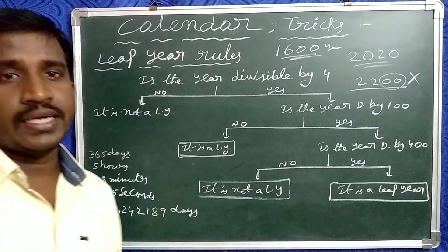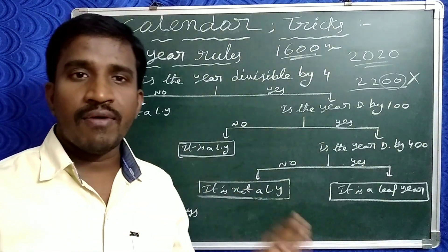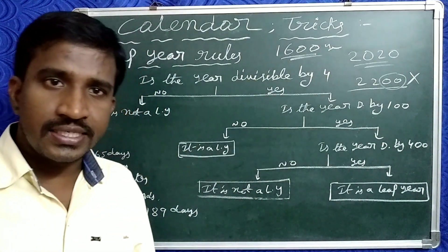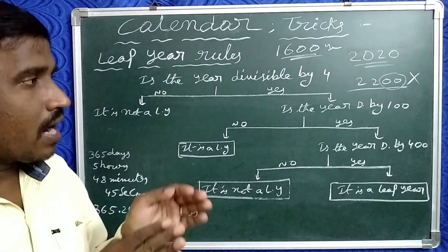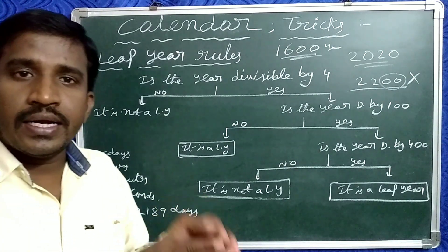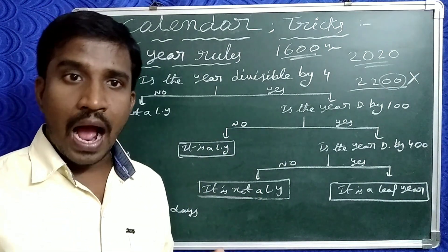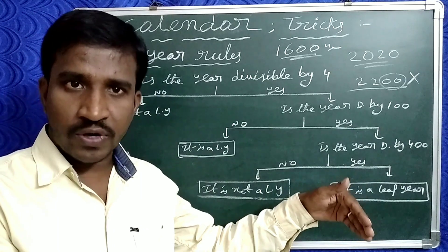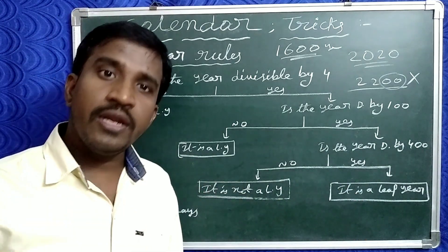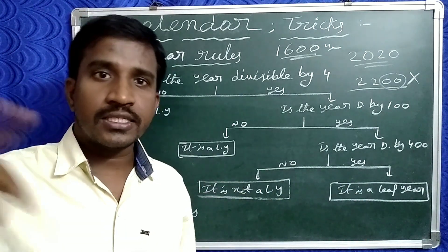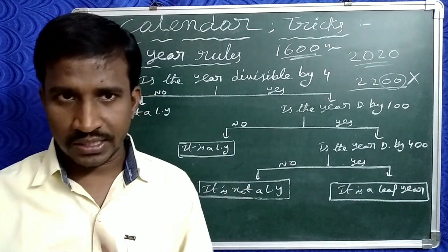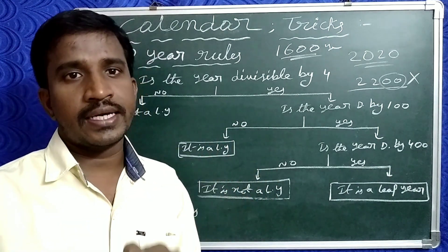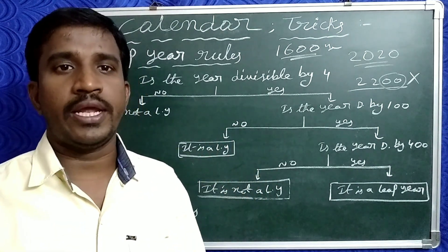This variation of 11 to 12 minutes accumulates over 100 years and corrects over 400 years. That's why after 400 years the extra accumulated difference balances out and that year is counted as a leap year.